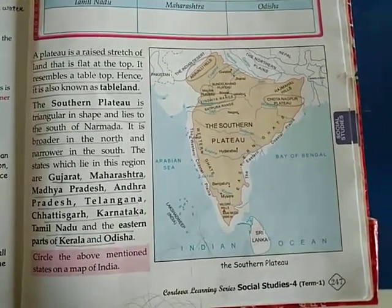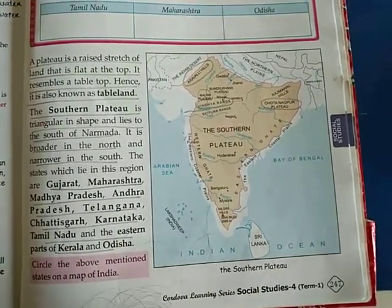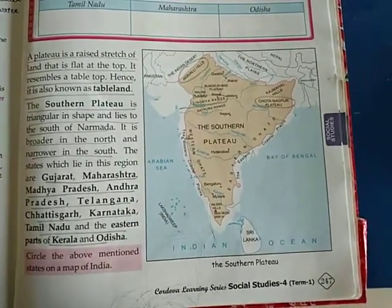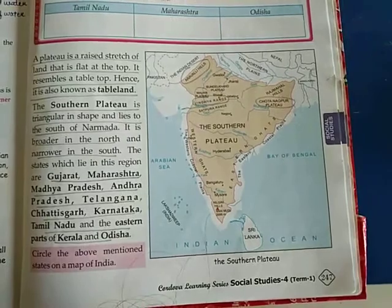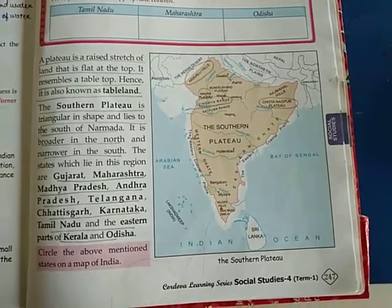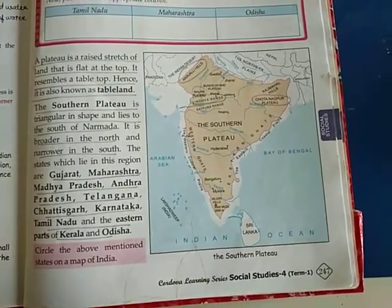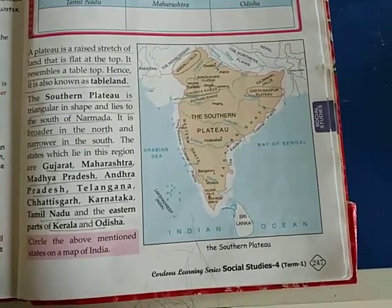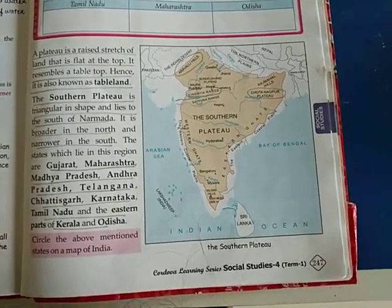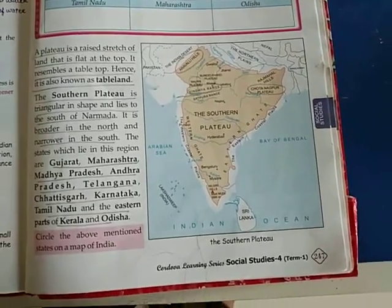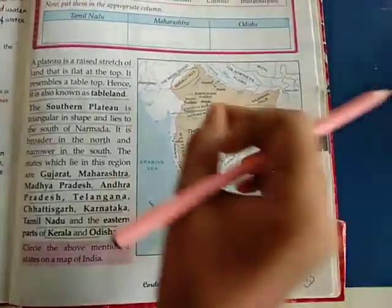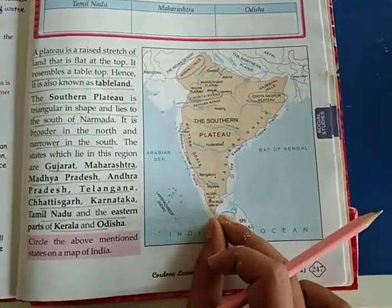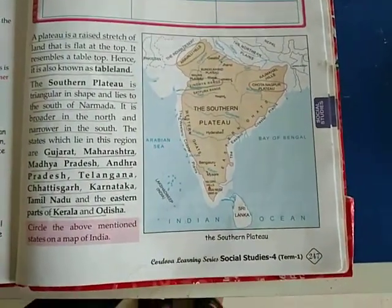The Southern Plateau is triangular in shape and lies in the south of Narmada. In this figure, you can see the Southern Plateau — this brown color which is triangular in shape — and falls in the south of Narmada. It is broader in the north and narrow in the south. Jaisi aap is figure me dekh sakti ho, toh yeh north ki taraf jab ja raha hai, toh broader hai. Aur jaisi jaisi hum south ki taraf jaate hai, toh woh narrow hota jaata hai.